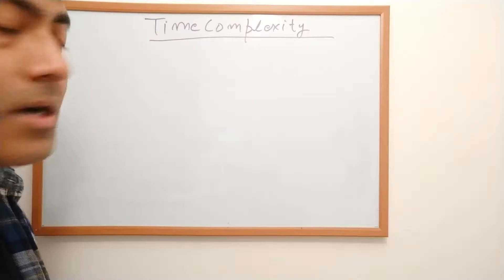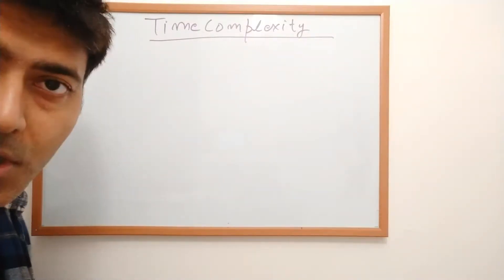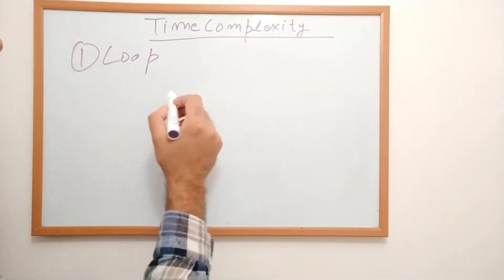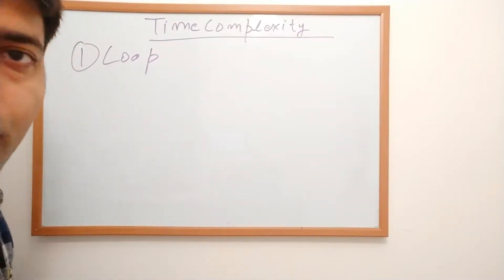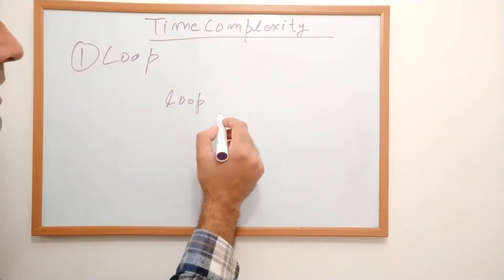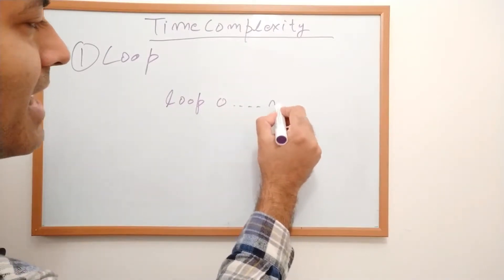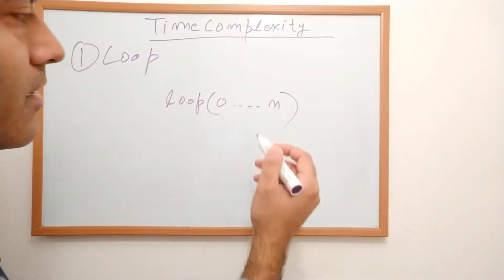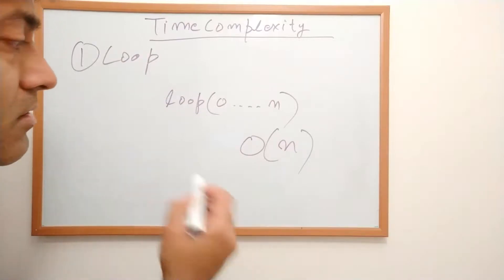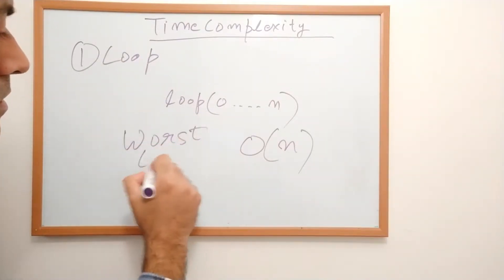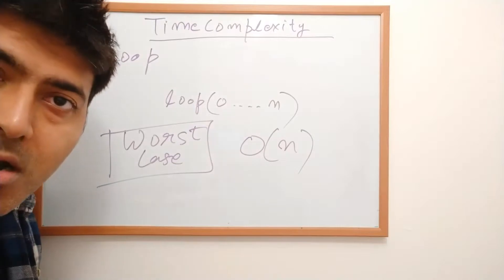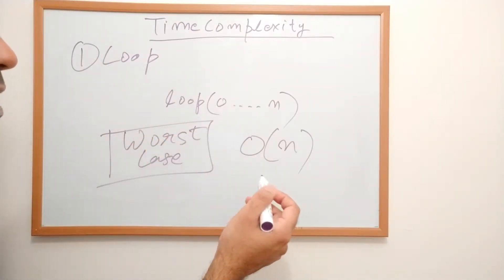The first way to find time complexity is to look for loops in your algorithm. If you have a for loop or any kind of loop going through n number of items — a loop going from 0 to n — your time complexity is O(n), which is the worst case scenario. When you have one loop in your algorithm, your time complexity is simply Big O of n.